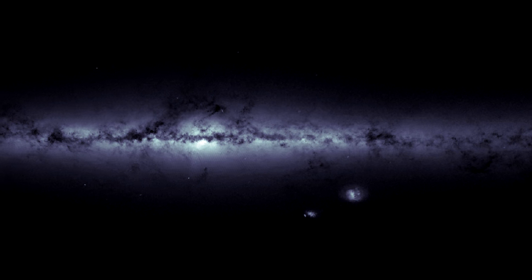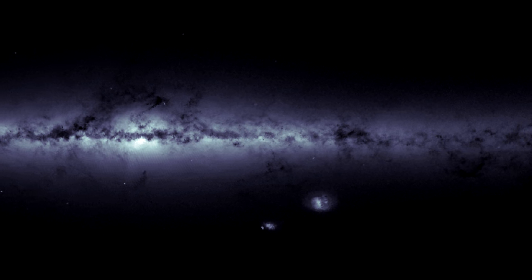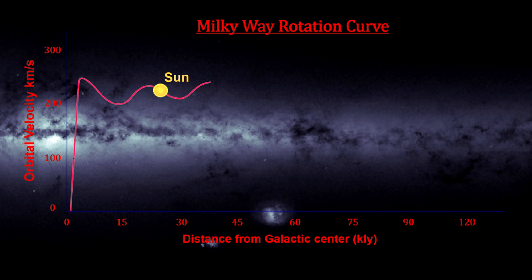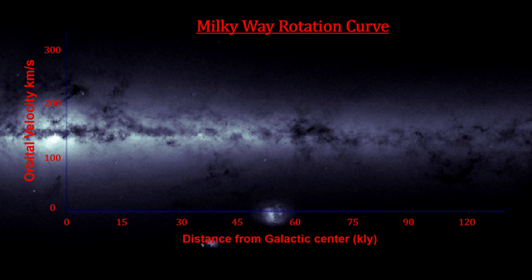But at the outer edges of the disk, the star density drops off dramatically. In the 1970s, everyone expected to see rotation curves that look like this. But in 1975, an American astronomer, Vera Rubin, published galaxy rotation curves for the Milky Way and a number of other galaxies that showed a remarkable result: where the velocities were expected to fall off, they remained relatively constant.